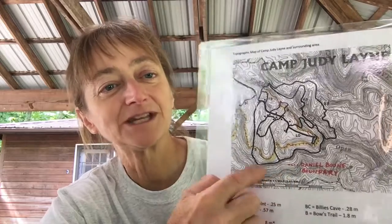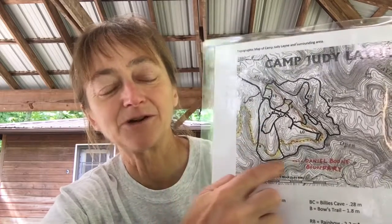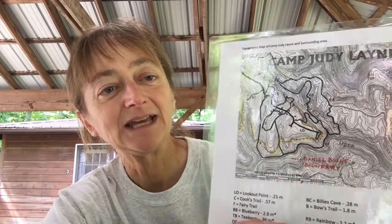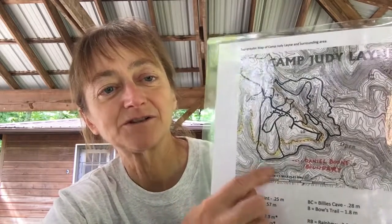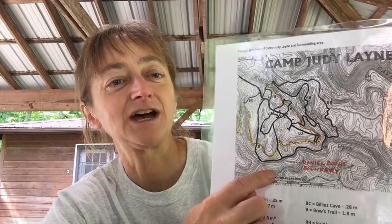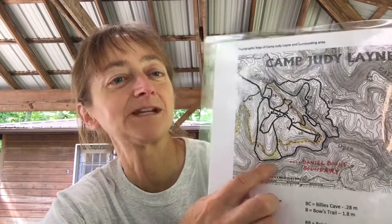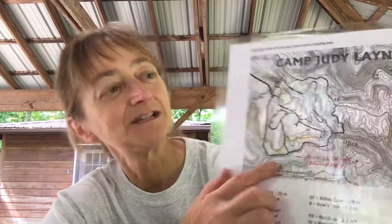There are rivers marked on this, trails marked on this, and the boundary. The closer together these lines are — these are elevation lines — the steeper the land.